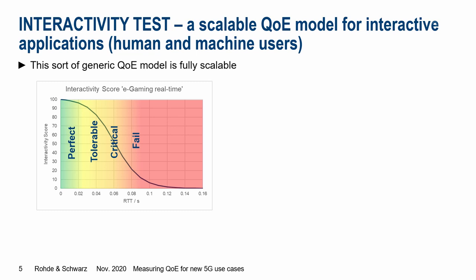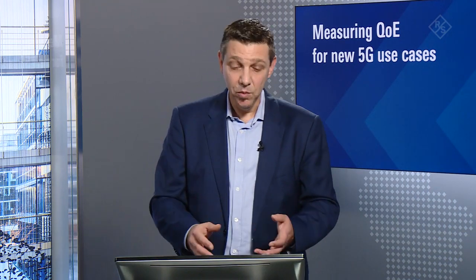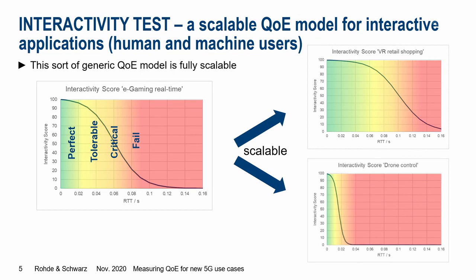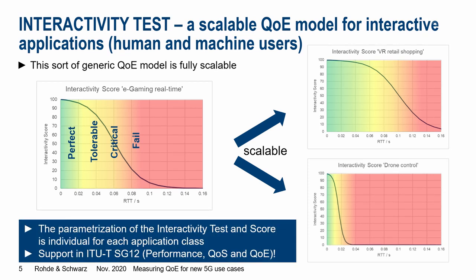With this model, we are able to simulate different use case patterns, which means we are scalable — we can adapt it to other use cases. For example, virtual reality retail shopping, where the requirements are not as strict and the curve shifts to the right. Or drone control, where we need very strict requirements because interactivity is critical. With this new test approach, by means of parametrization, we can emulate different use case classes. That's the beauty of this concept.